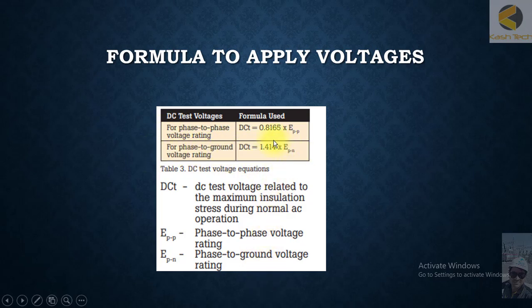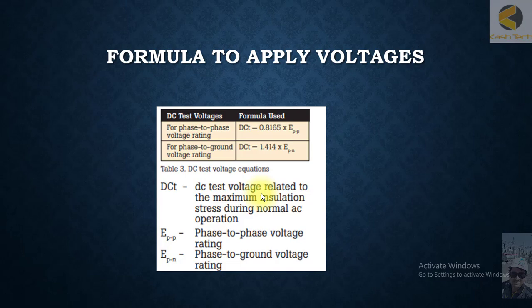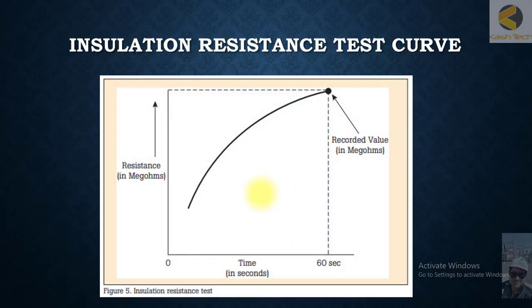For maintenance testing, the applied DC voltage level is less than the equipment rating. In contrast, for initial installation testing, if factory values are unknown, you apply two times the rating plus 1 kV, since this is the first-time test to determine whether the equipment passes or fails.